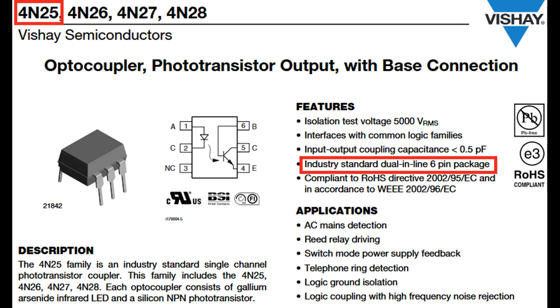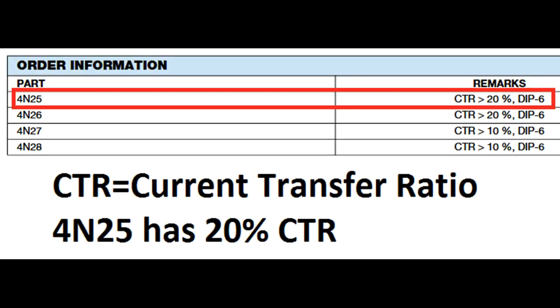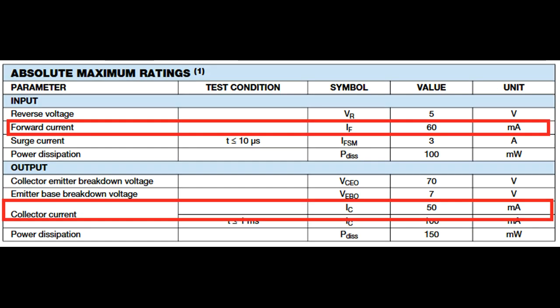Let's take a look at the data sheet that we're using. The part we've selected is a 4N25, it comes in a standard six pin dip. Critical factor of the 4N25 is it has a twenty percent CTR or current transfer ratio. We'll take a look at what that means in a few minutes, turns out it's a very critical parameter.